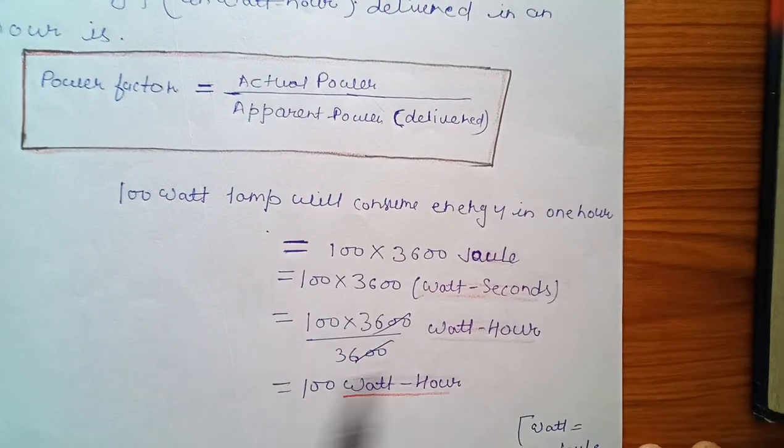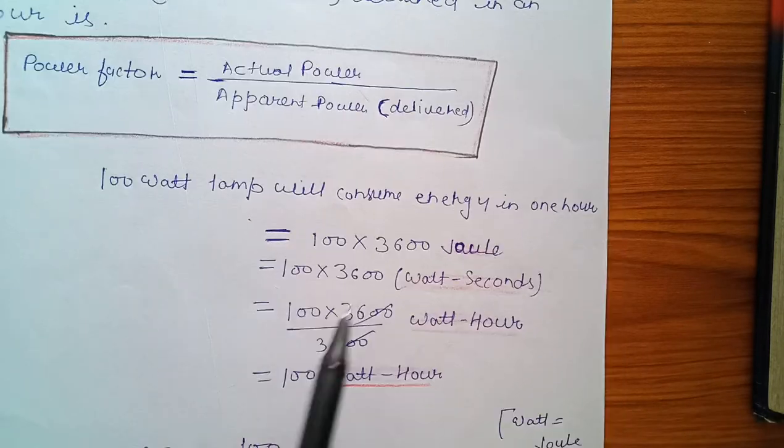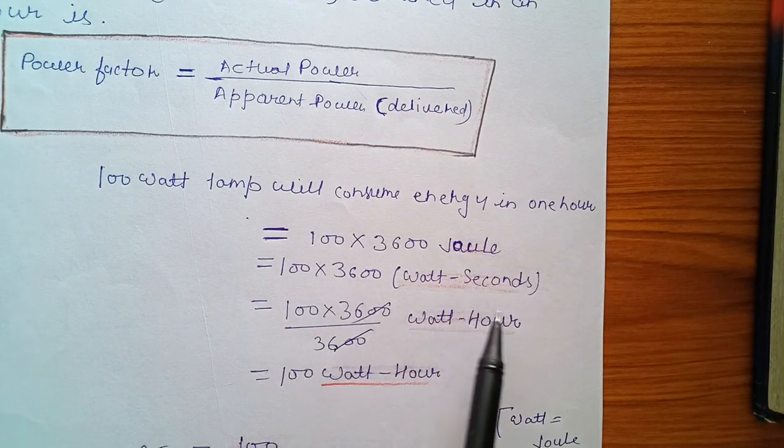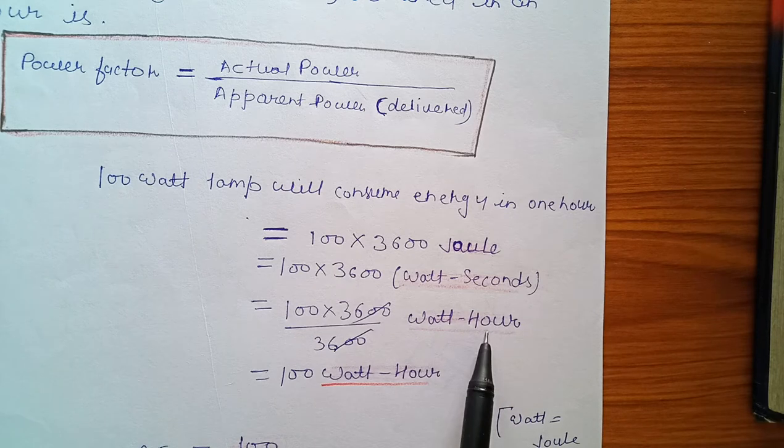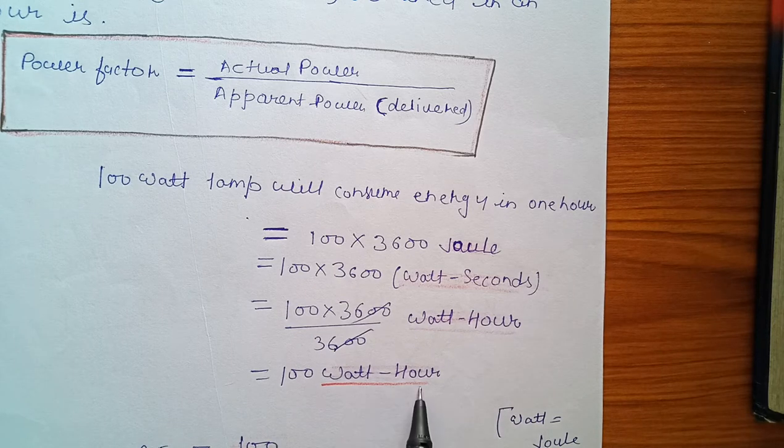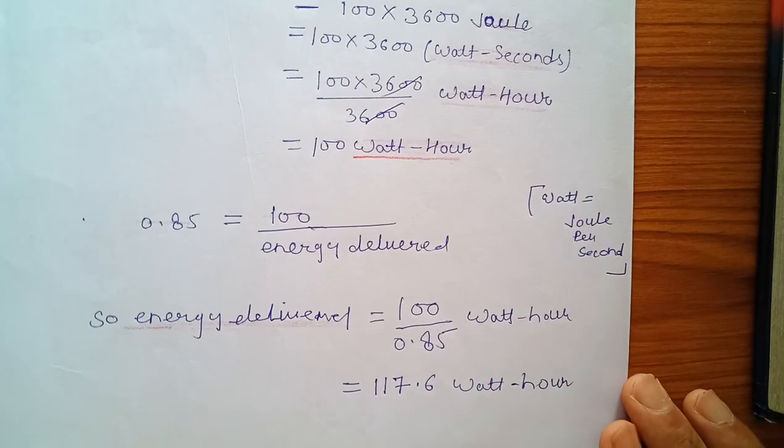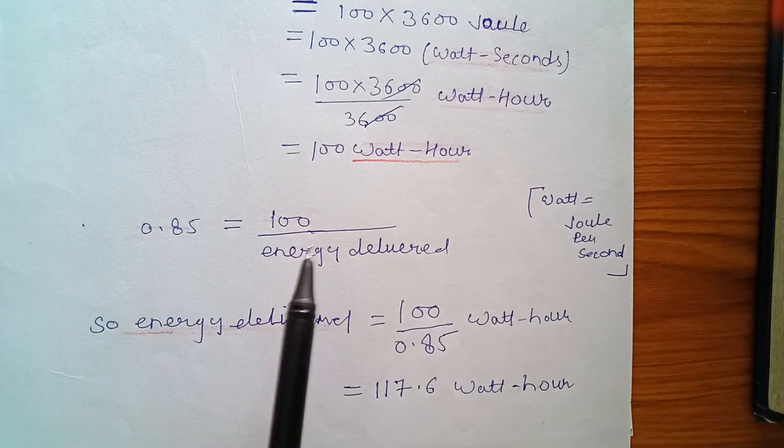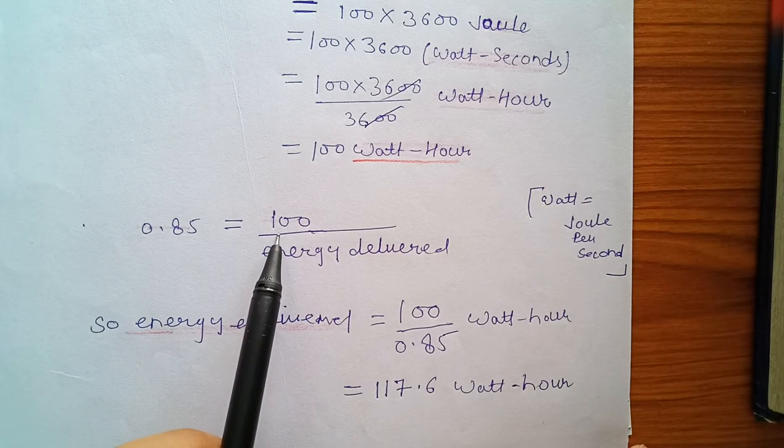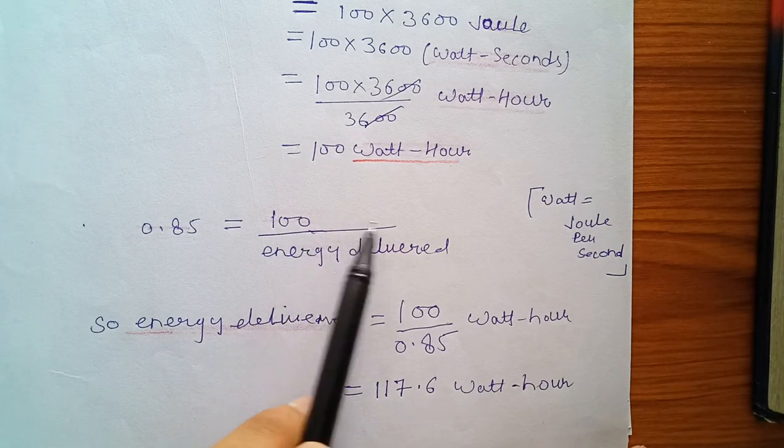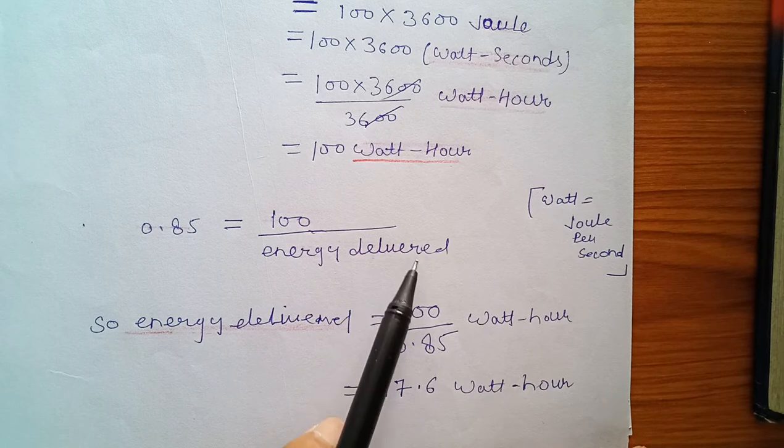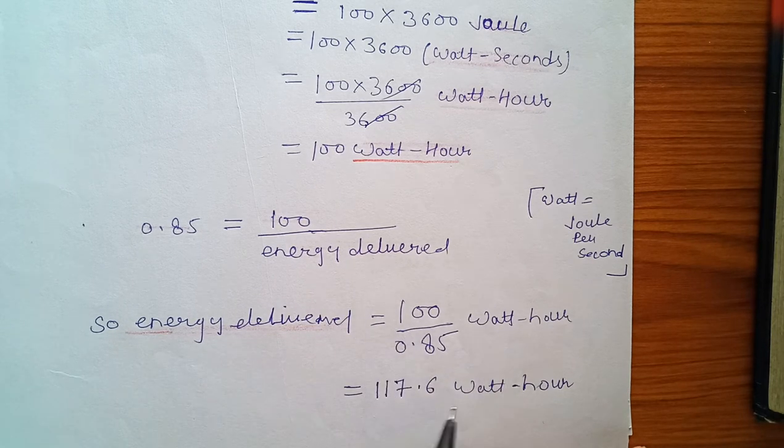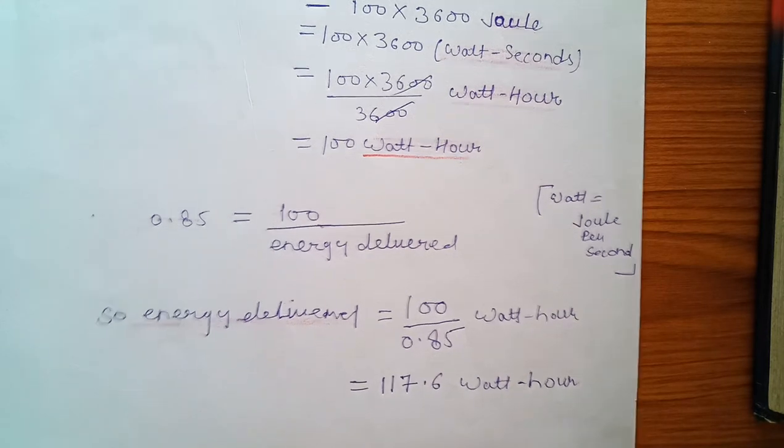Apparent power is what is delivered, actual power is what is utilized. So 100 watt lamp will consume energy in one hour: 100 times 3600 joules, then converting into watt-hours, 100 watt-hours. Putting the value in formula: 0.85 is given power factor, actual power is given, and we have to find out the energy delivered. So energy delivered is equal to actual power divided by power factor. Simply from the formula.